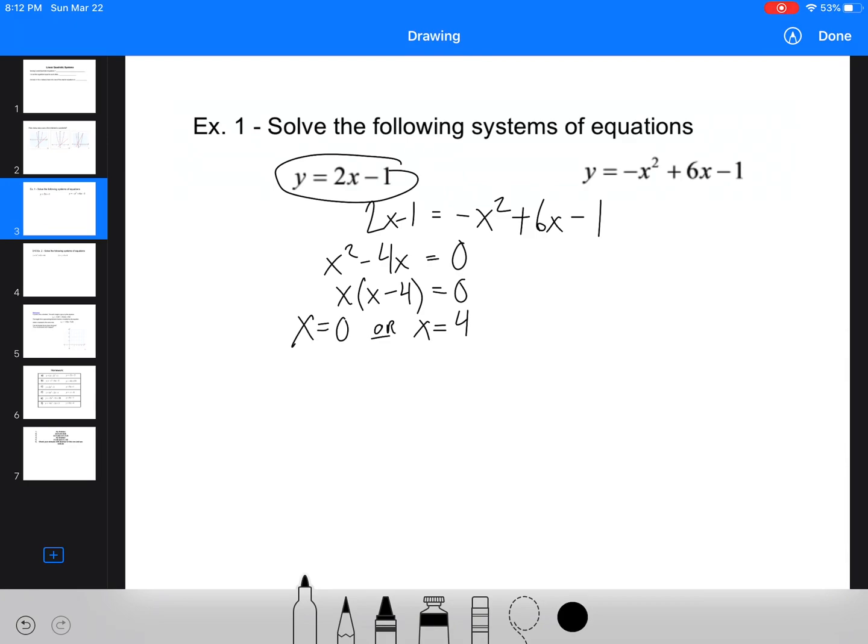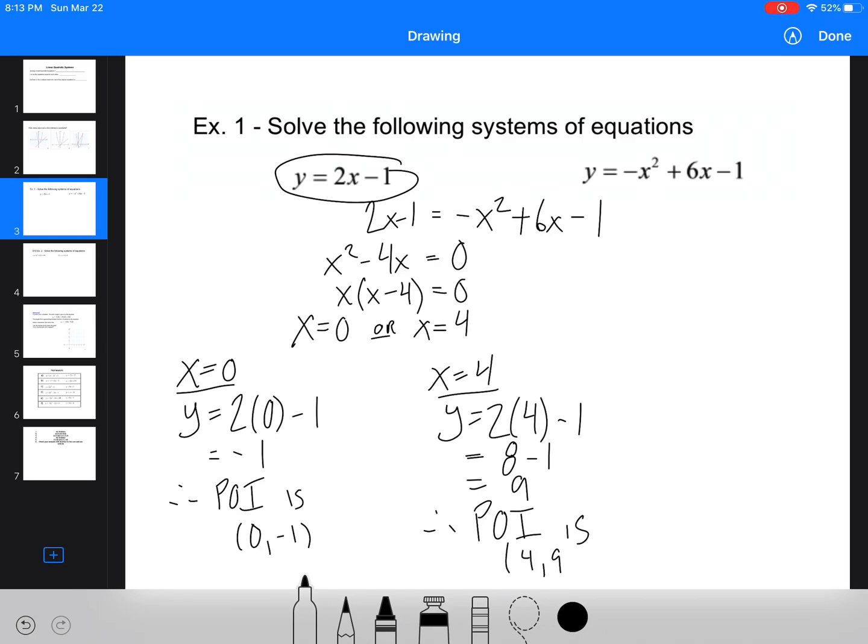Then I'm just going to use the linear equation because it's always going to be easier. So for x equals zero, we've got y equals two times zero minus one is negative one. Therefore the point of intersection here is zero, negative one. And then for x equals four, we've got y equals two times four minus one, which is eight minus one, which is nine. Therefore our point of intersection is four and nine.